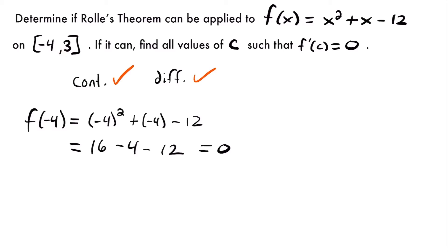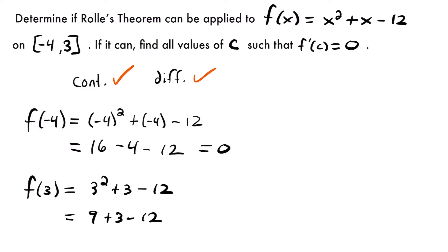Now let's check the other endpoint: f(3) = 3² + 3 - 12 = 9 + 3 - 12 = 0. Both endpoints give the same result when plugged into the function, so they have the same y-value. We can now confirm that Rolle's theorem can be applied to this function on the given interval.